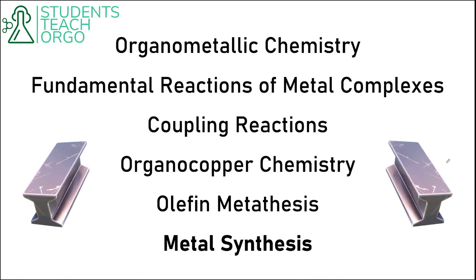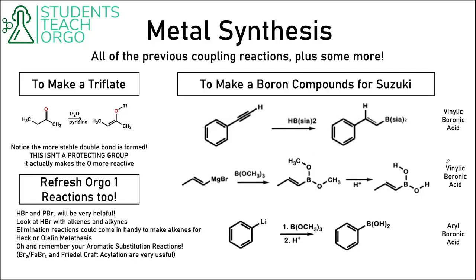In this last section, we're going to learn a few more reactions that will be really important for metal synthesis, then try some practice problems incorporating the coupling reactions we've discussed. Remember that Heck, Suzuki, and Sonogashira all needed either a vinyl or aryl halide or triflate. So the reaction to make a triflate is going to be really important. If we take a ketone and use Tf2O over pyridine, we create a triflate. A common misconception is that the Tf group is a protecting group — that's not the case. OTf is more reactive, making it a better leaving group, behaving similarly to an alkyl bromide.